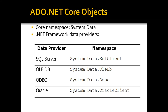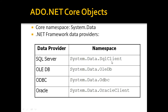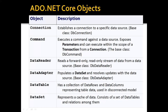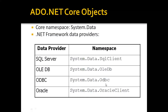Within the System.Data namespace, we choose the required database provider. If we want to communicate with SQL Server, we use SqlClient. For OLEDB, we use OLEDB. For ODBC, we use ODBC. And for Oracle, we use OracleClient. These specific namespaces contain the required classes and interfaces which we can directly use.